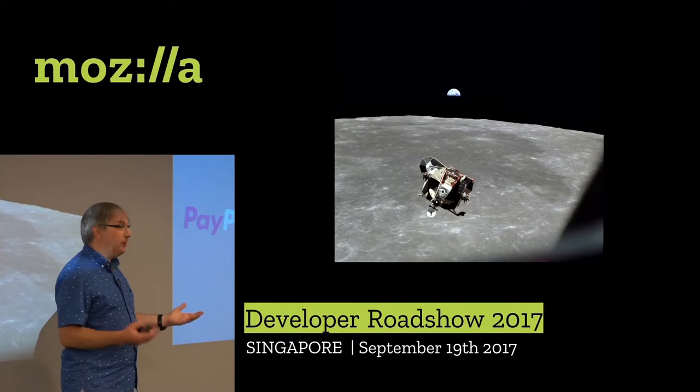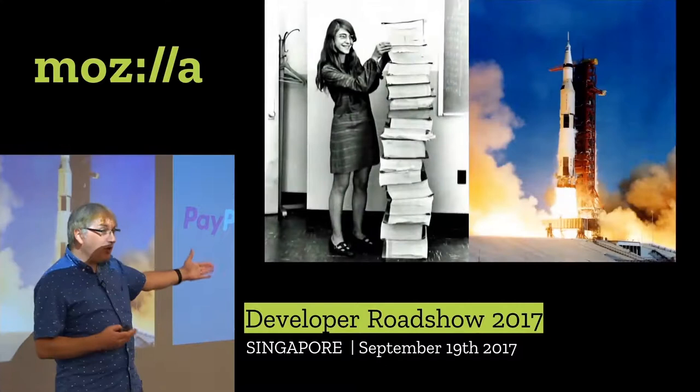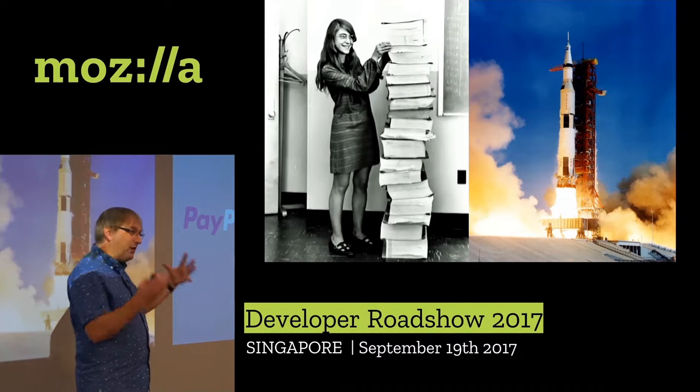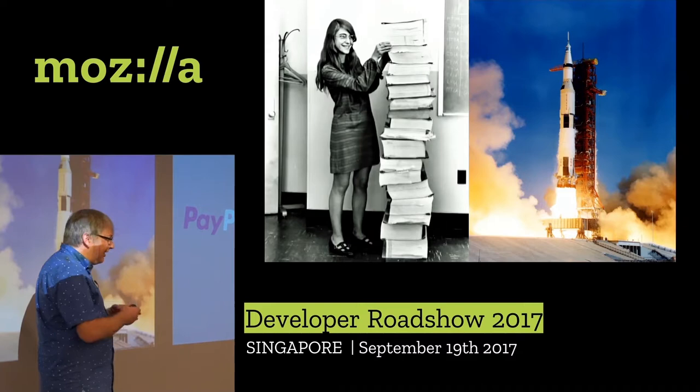A really good example of this in the 20th century would be something like the Apollo landings — getting to the moon. It required amazing human beings, yes, but it also required amazing hardware: the most powerful rocket ever built to this day, the Saturn V rocket. And amazing software that Margaret Hamilton wrote for the onboard system of Apollo. So it's a classic example of these three things working together: humans, software, and hardware.